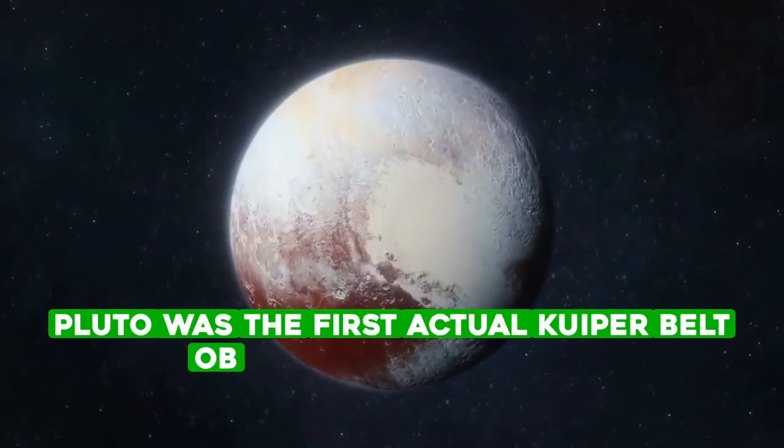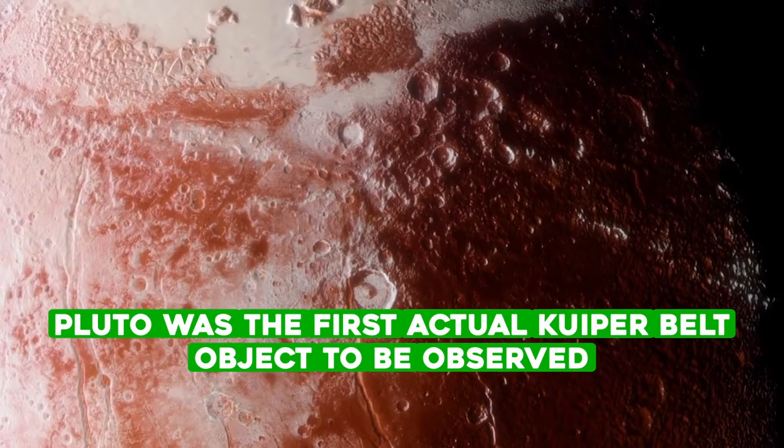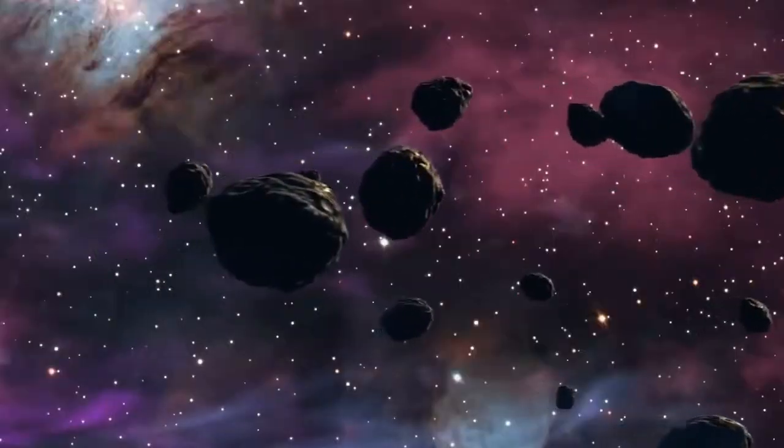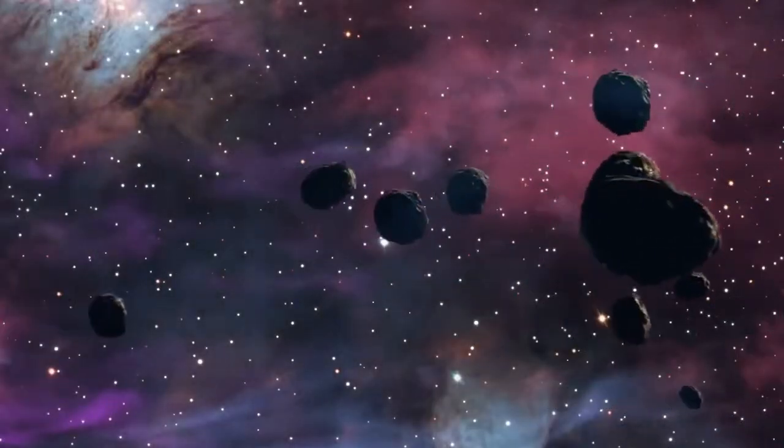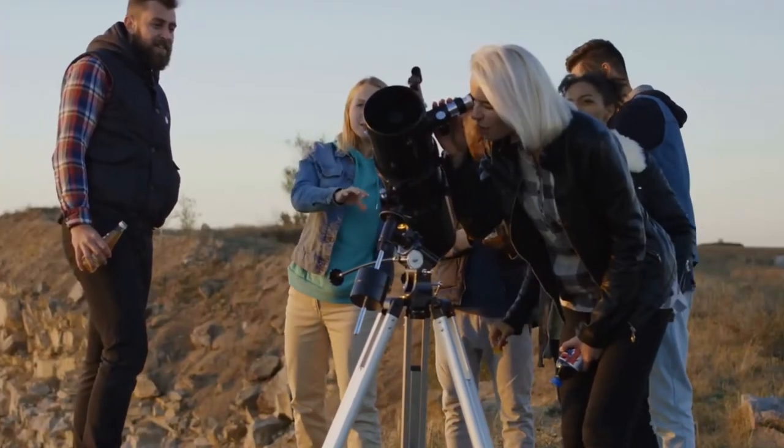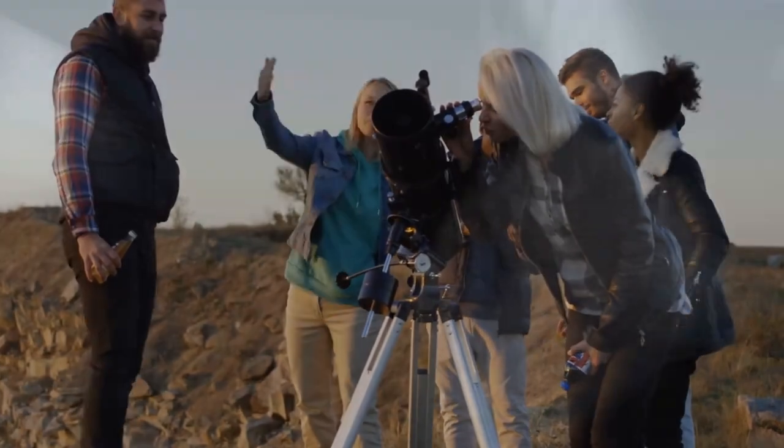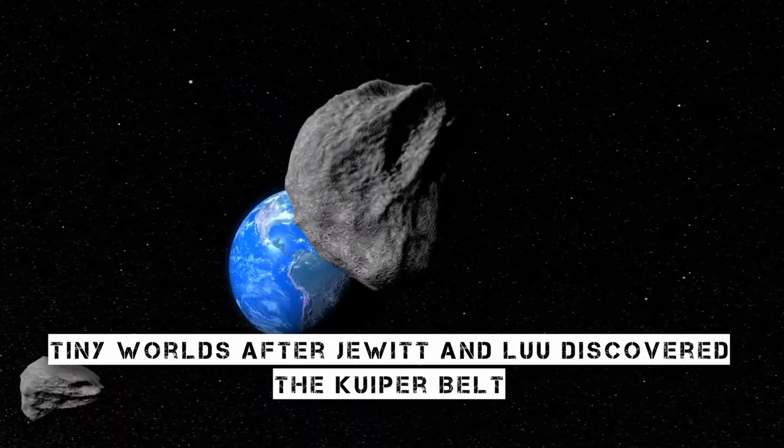Although Pluto was the first actual Kuiper Belt object to be observed, until now Kuiper Belt objects were found, scientists at the time did not acknowledge it as such. Astronomers quickly realized that the area beyond Neptune was full of frozen boulders and tiny worlds after Jewett and Lou discovered the Kuiper Belt.